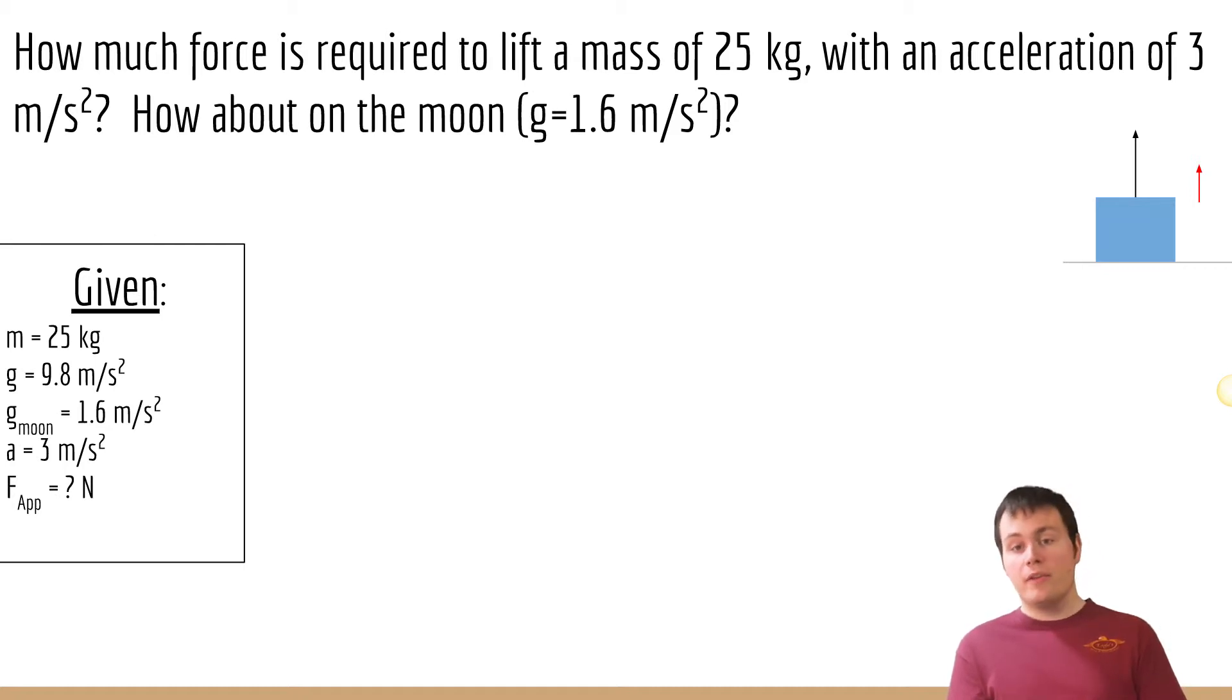Next thing we want to do is write a force diagram. That way it will help us figure out exactly all the forces that are involved. In this case it's pretty simple: we know there's gravity pulling it down and it's being lifted up, so there must be some force that is lifting it. Because it's accelerating upwards, the force lifting it up should be greater than gravity.